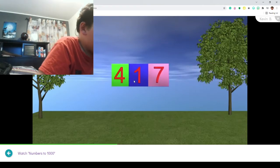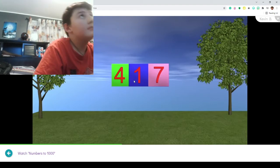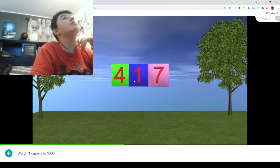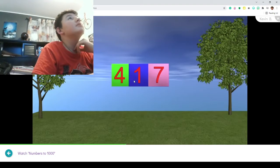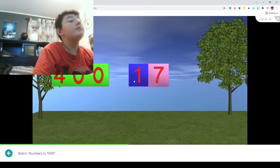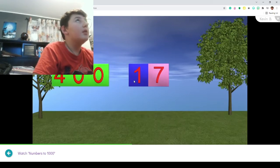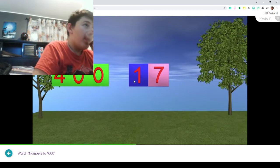Here we have the number 417. So how much is the 4 worth in this number? The 4 is in the hundreds place, so we have 400. How much is the 1 worth? The 1 is in the tens place, so it is worth 10.